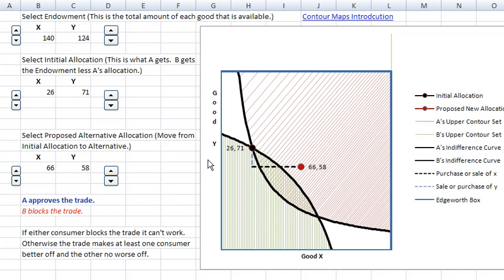This screen looks very much like our very first screen on barter. What's different here is A's indifference curve through the endowment. What's different is I'm showing the points for A that are better than the endowment point. That's this shaded in red area.